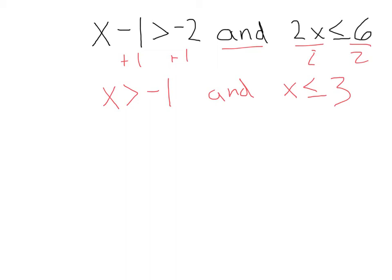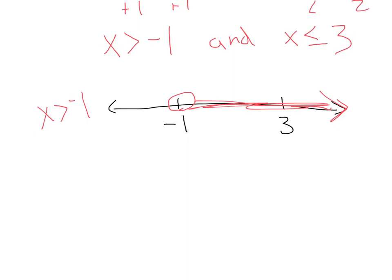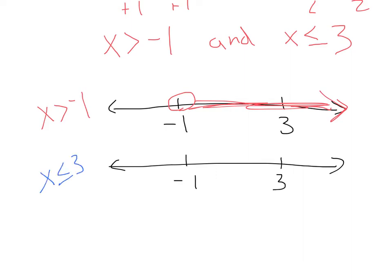I'll give myself a number line with our important numbers, negative 1 and 3 — negative 1 on the left because it's smaller. First, graphing x is greater than negative 1: that's an open dot, shaded all the way to the right. Next, I'll give myself the same number line with negative 1 and 3, and graph x is less than or equal to 3 — a closed dot on 3, shading everything to the left.